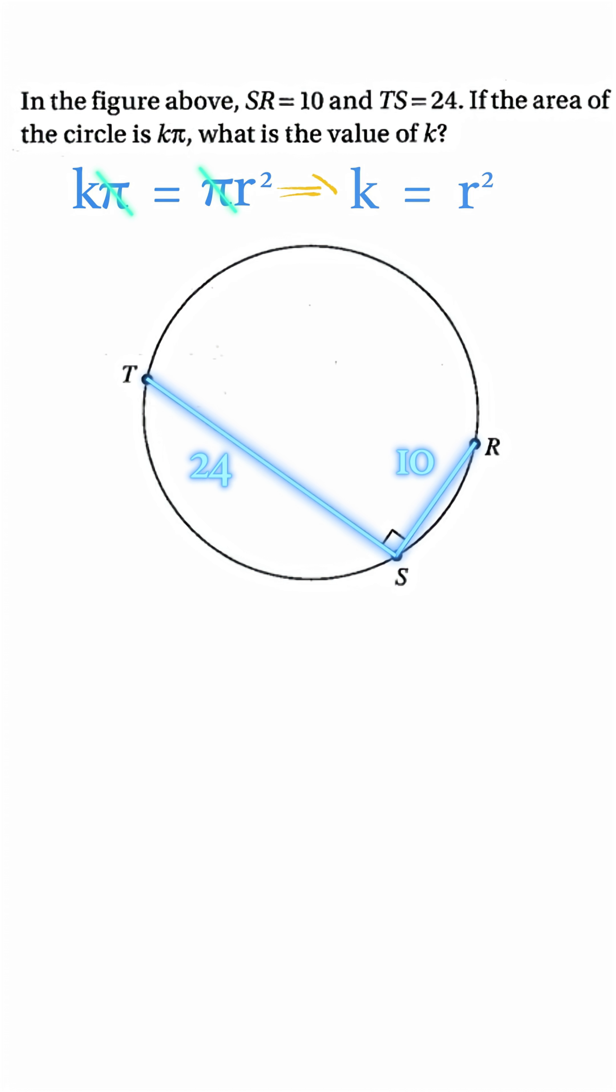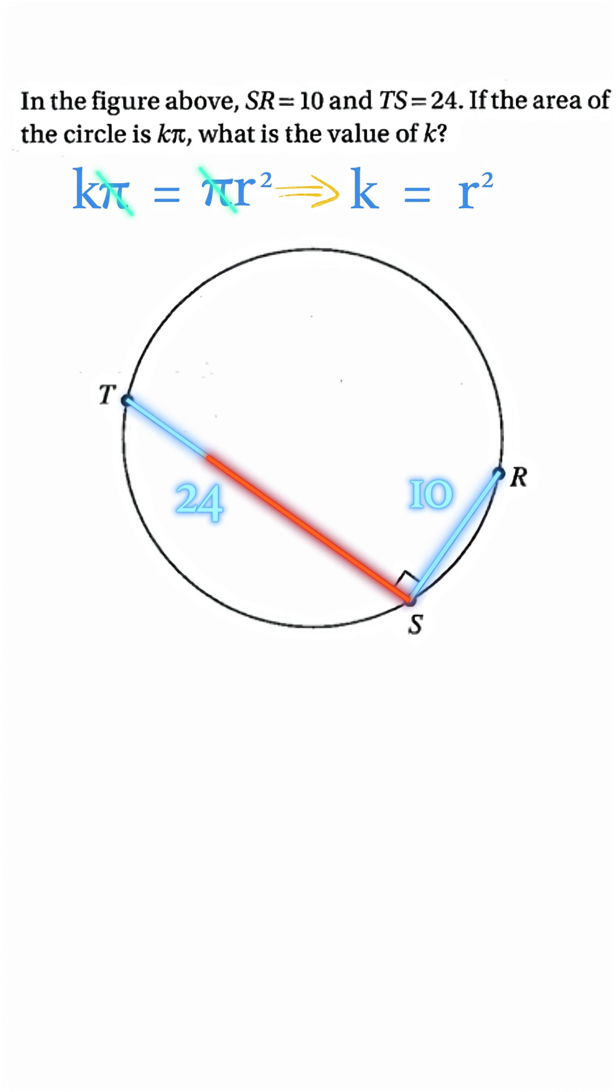So the whole game is about finding the radius. But here's the catch, the TS equals 24 unit segment isn't the diameter, as it doesn't go through the center.